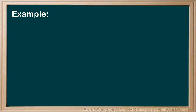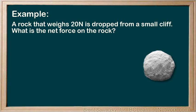Let's consider an example. A rock that weighs 20 newtons is dropped from a small cliff. What is the net force on the rock? Let's start with a free body diagram. Remember that a free body diagram includes all of the forces acting on the object. We'll show the force of gravity pointing down — gravity always points towards the center of the earth, which in our free body diagram is simply down. The amount of the force of gravity is 20 newtons, since weight is just another name for the force of gravity.